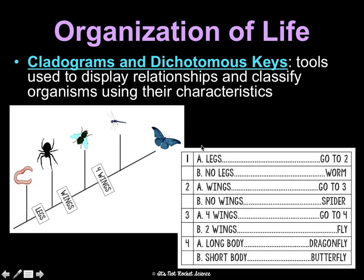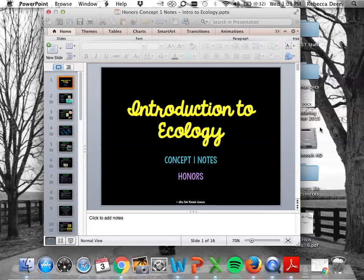Let's classify this organism using the key. Starting at number one: does it have legs or no legs? It has legs, so we go to step two: does it have wings or no wings? It does have wings, so we go to step three: does it have four wings or two wings? It has four, so we go to step four: does it have a long body or short body? It has a pretty long body, so this is a dragonfly. We're going to use a key to classify some monsters in your packet to practice this. And that's your introduction to ecology, concept one notes.